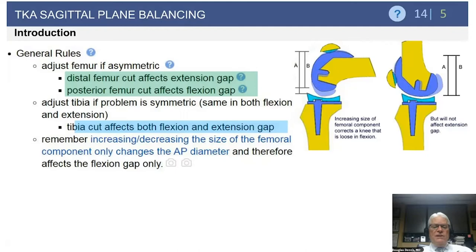Remember, if you are increasing or decreasing the size of the femoral component, that changes only the AP diameter and affects the flexion gap only. So again, very important principle: distal femoral cut affects the extension gap only; posterior femoral cut affects the flexion gap only; and the tibial cut affects both flexion and extension.